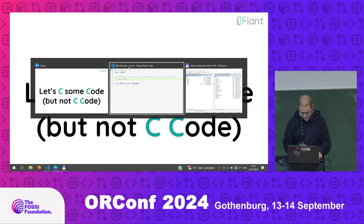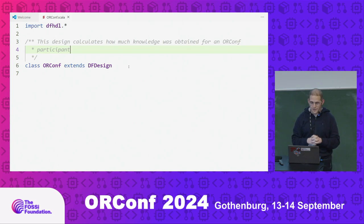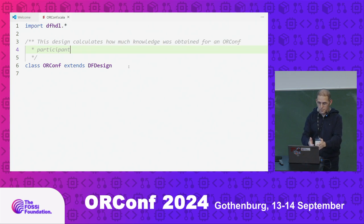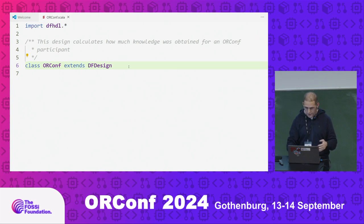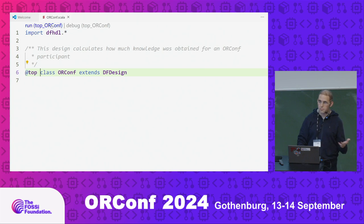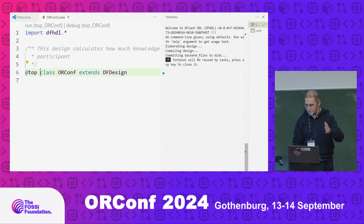So let's see some code — but not see code. We'll have a live demo of an ORConf design module. This design will calculate how much knowledge was obtained by an ORConf participant. You start by importing Defiant HDL, and you write the class `ORConf extends dfdesign`, which is a dataflow design. If you start with RT design it's register transfer abstraction; with ED it's event-driven. Once you annotate the design with `@top`, you can immediately run something — it compiles the design, commits it to disk, and says no command given, using defaults.